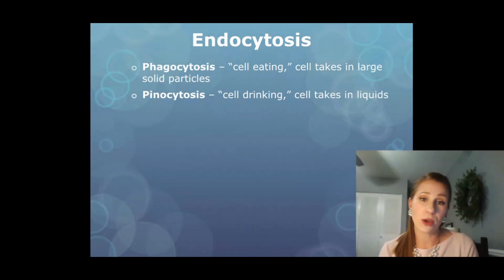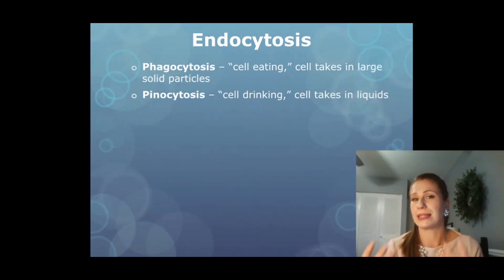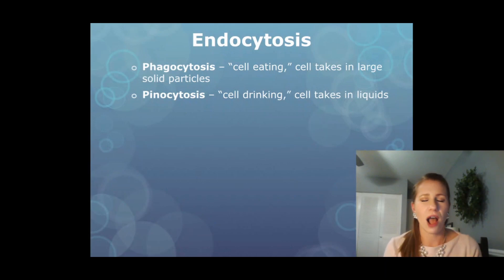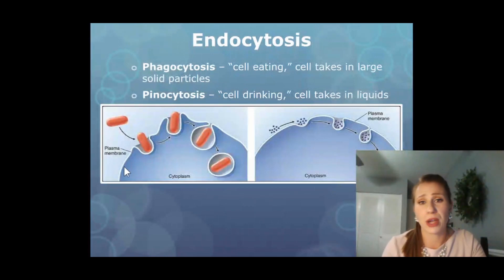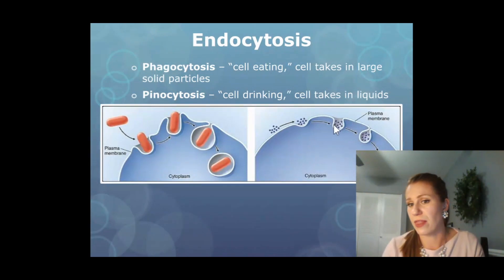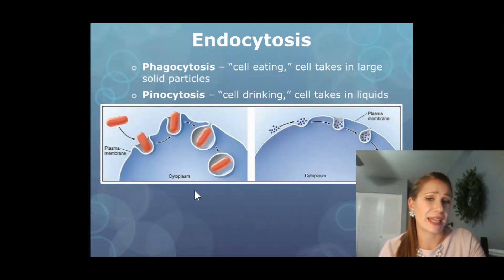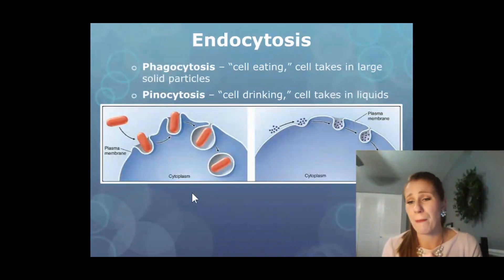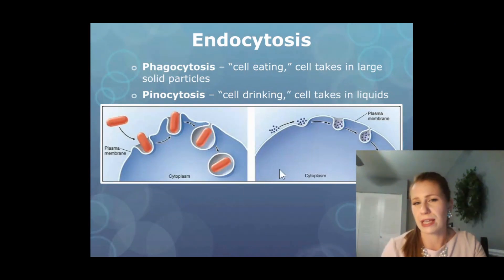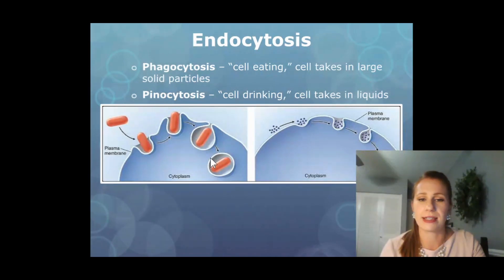Phagocytosis is cell eating, where the cell takes in large particles. Pinocytosis is cell drinking, where the cell takes in different liquids like water; other larger molecule liquids would also require pinocytosis. This diagram shows phagocytosis on one side and pinocytosis on the other — it's the same process. Materials get engulfed in the cell membrane, which pinches off to form a vesicle that moves to where it's required in the cell.